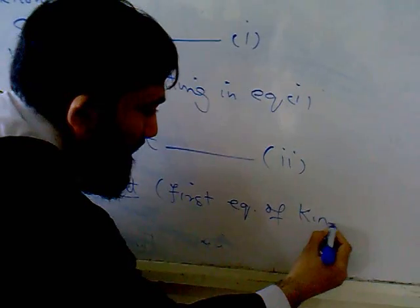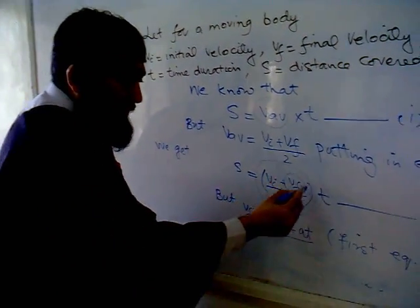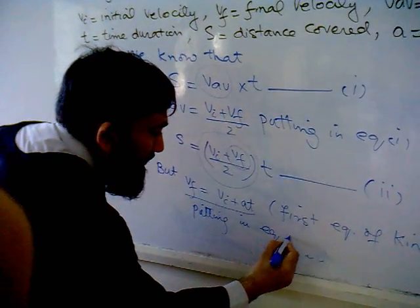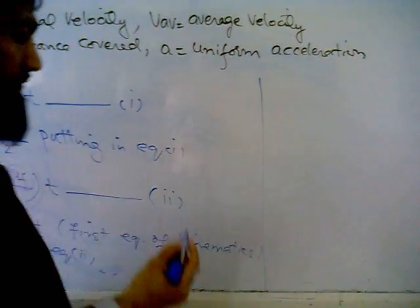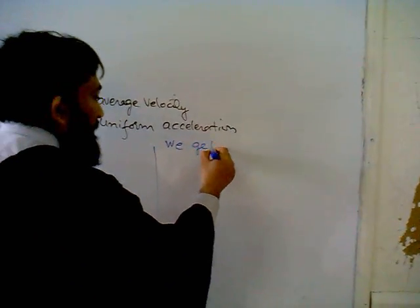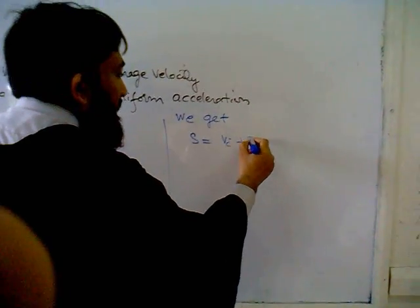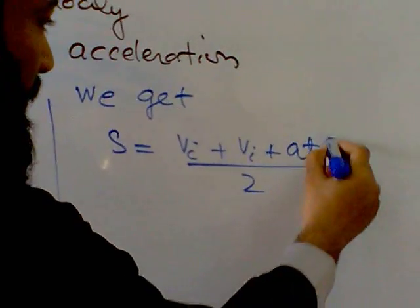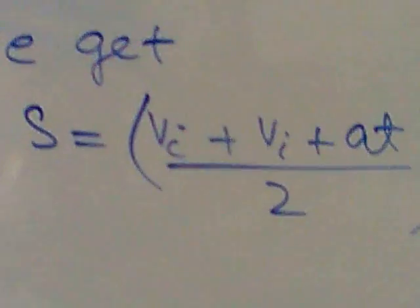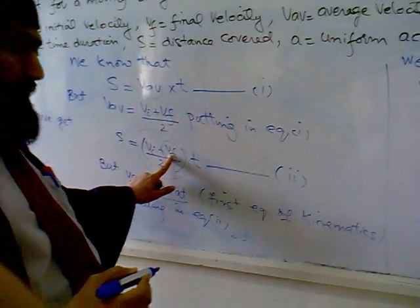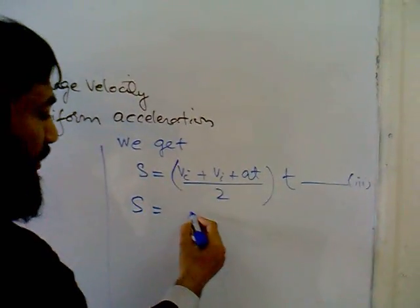So this value we put in equation 2. We get s = [vi + (vi + at)]/2 × t. Look here, there is no difference. This is the same as equation number 2, but we have put the value of vf. So it is vi plus vi - how many vi's are there? Two vi plus at divided by 2 multiplied by t.